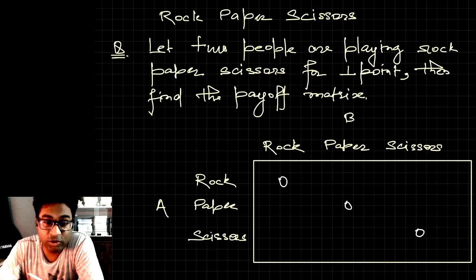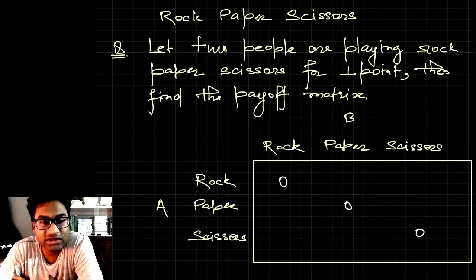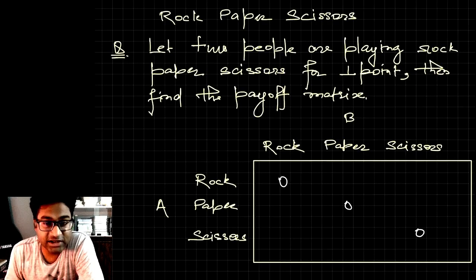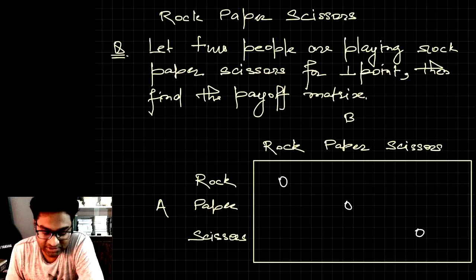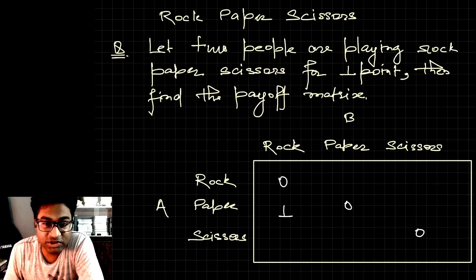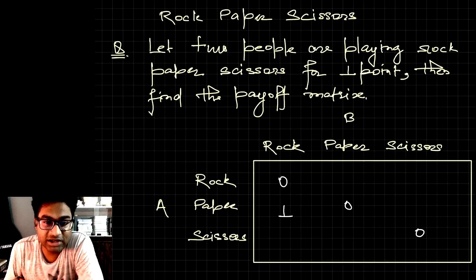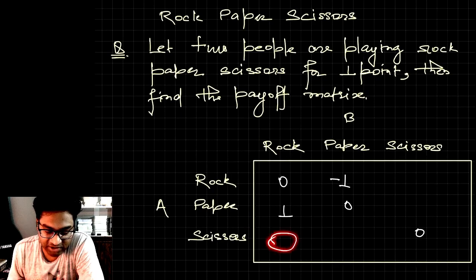If they both are using the same strategy, they get zero. If player A is using paper and player B is using rock, then paper will cover the rock so player A wins and gets one point. In the symmetric position, if player A is using rock and player B is using paper, player A will lose and get minus one point.